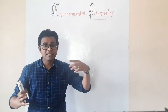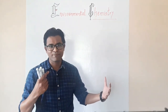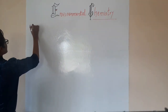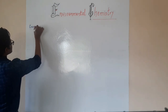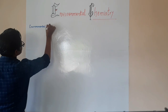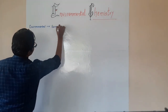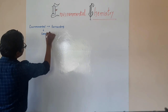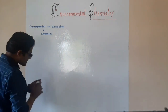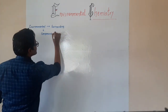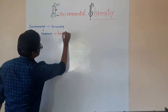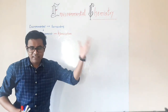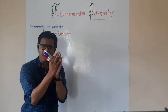When we say surroundings and its components, the major component of the environment is our atmosphere. The environment contains two simple things: your surroundings and a major component, which is the atmosphere. When we speak about the atmosphere, this atmosphere is going to be a combination of various types of gases.